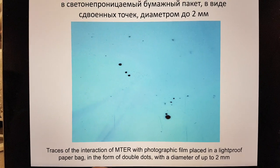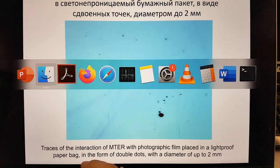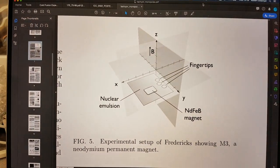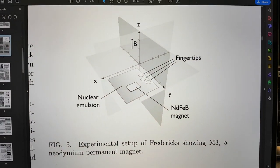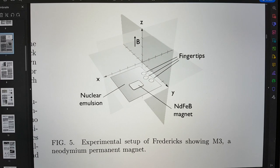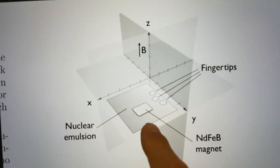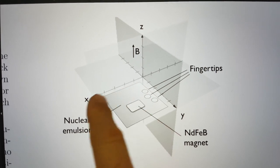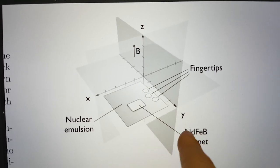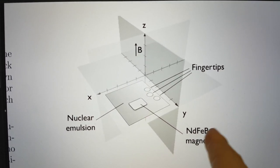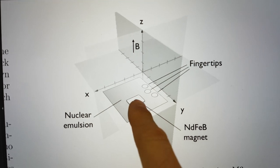Just looking through some other notes, I came across this work by Keith Fredericks, who has looked a lot into strange radiation. He did this experiment where he was taking some nuclear emulsion and he was putting a very strong neodymium iron boron magnet on here.